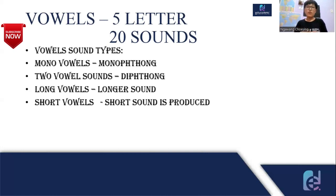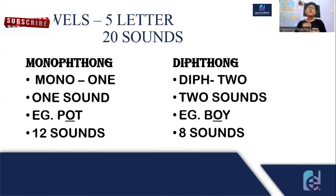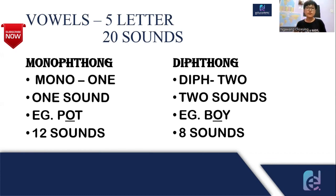Now we will learn monothong and diphthong. Monothong is a sound produced with only one vowel. Diphthong is a sound produced with two sounds. For example, in 'pot,' the O is produced with only one sound — oh — so it is monothong. On the other hand, in 'boy,' we don't just produce the O sound — we also produce an I sound at the end: B-OY. So 'boy' is an example of diphthong. That's it for today; the next lesson will be on consonant phonetics.